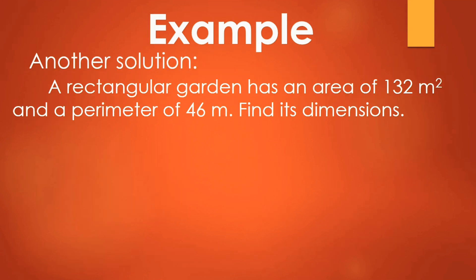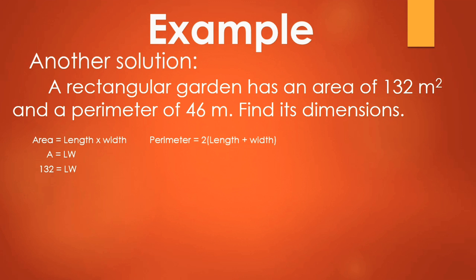Here is the other solution to this problem. We have A = l × w, so substitute: 132 = l × w. For the perimeter: P = 2(l + w). Substitute: 46 = 2(l + w). We need to remove the 2, so divide both sides by 2. 46 ÷ 2 = 23, giving us l + w = 23. We then transpose l to get the value of w.